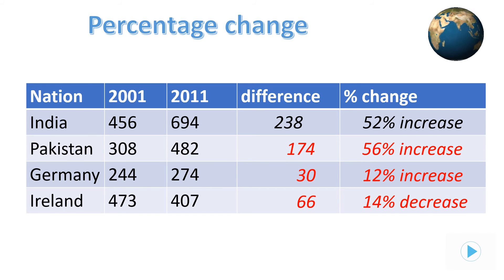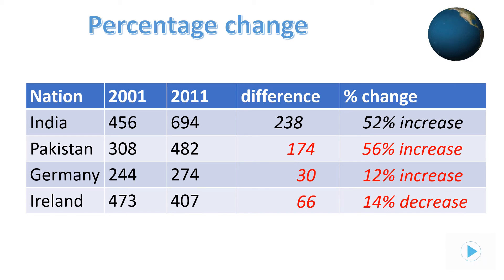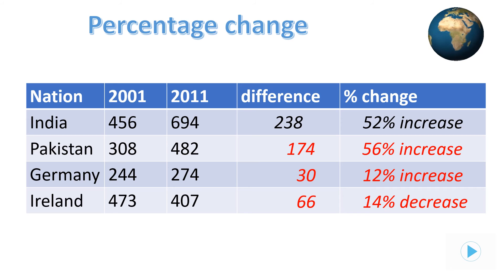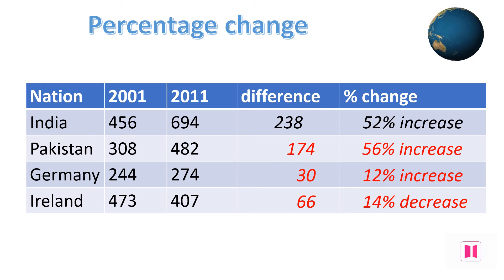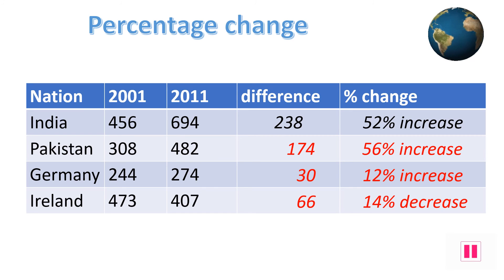Ireland, on the other hand, has a decrease between 2001 and 2011, falling by 66, which is a 14% decrease. It was calculated in the same way as the previous ones — by finding out the difference, dividing it by the original figure from 2001, and then multiplying by 100.